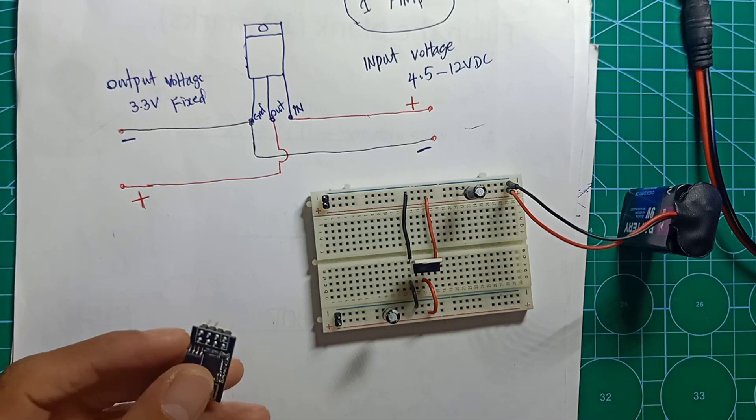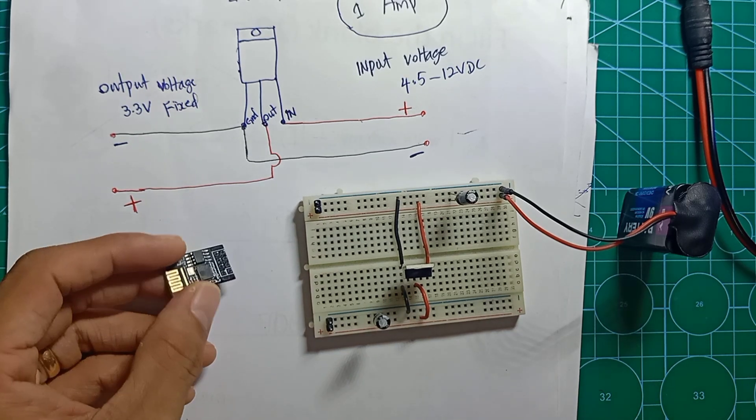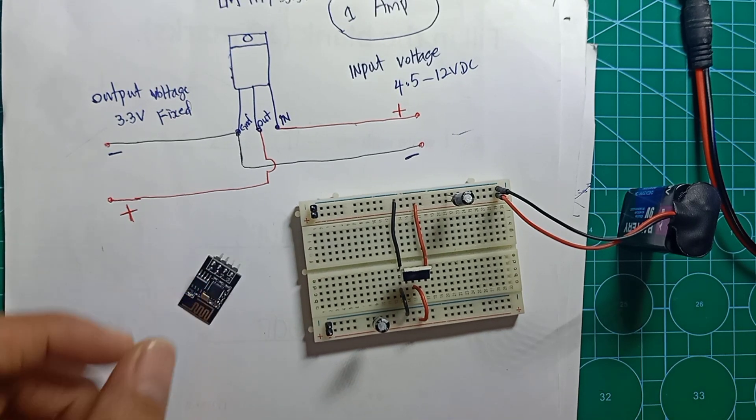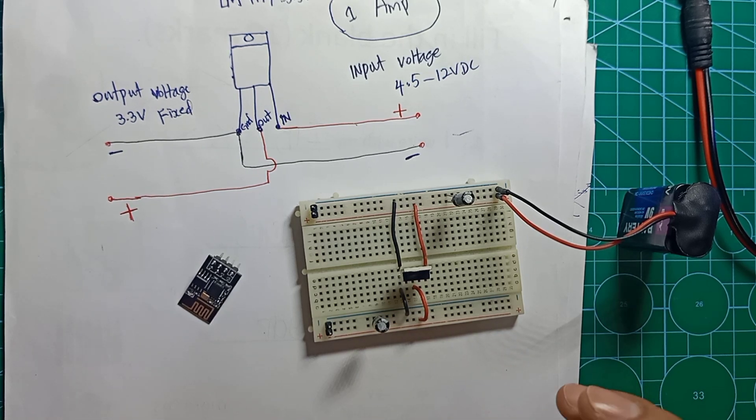Now you can power your ESP8266 or any other 3.3 volt device. This is how we can make a 3.3 volt DC output. I hope this video will help someone who would like to know how to make 3.3 volt output. Thank you for watching my video.